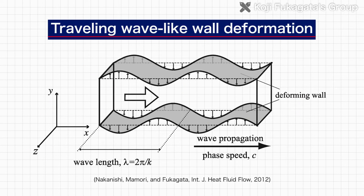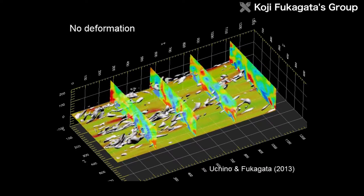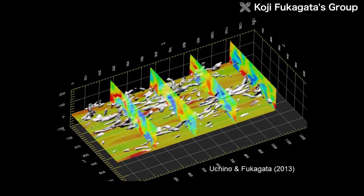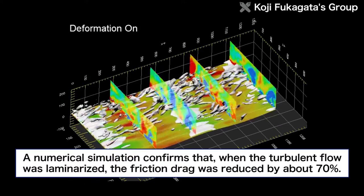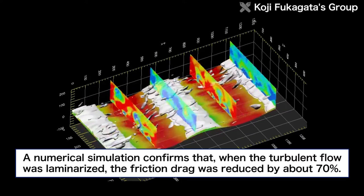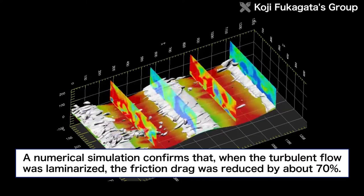Based on this understanding, and after undergoing trial and error by using travelling wave-like wall deformation, the turbulent flow was laminarized. This resulted in a numerical simulation confirming an approximate 70% reduction in the friction drag.